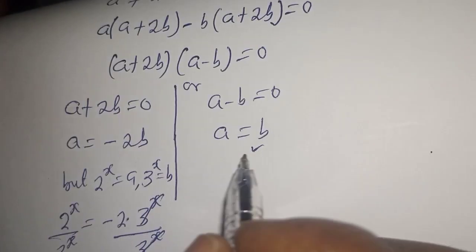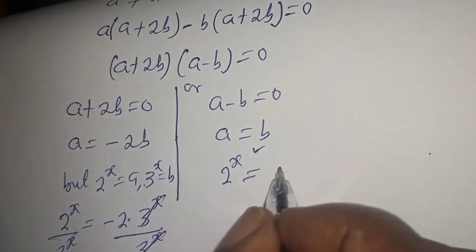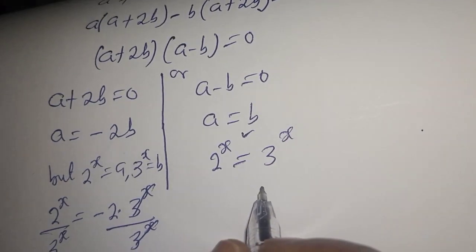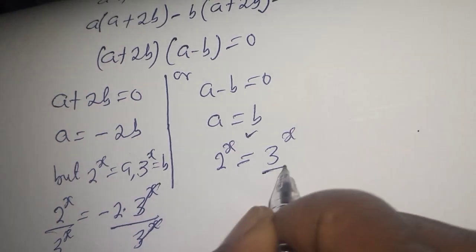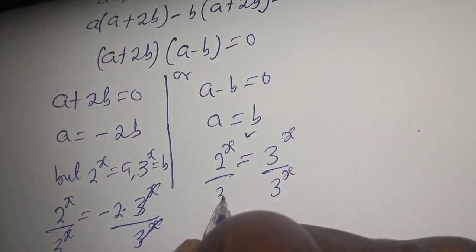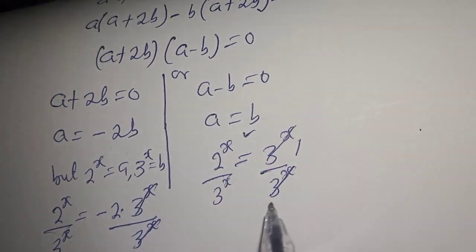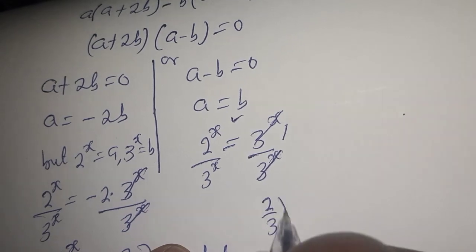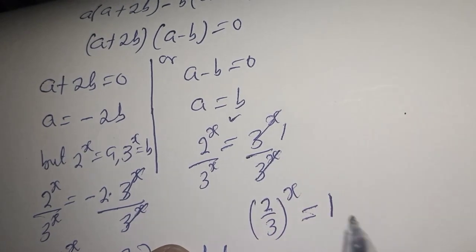Now let's consider the second case: a minus b equals 0, meaning 2 raised to power s equals 3 raised to power s. Dividing both sides by 3 raised to power s gives 2 over 3 to the power of s is equal to 1.